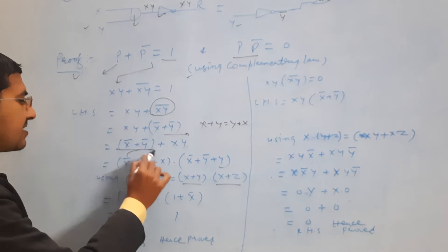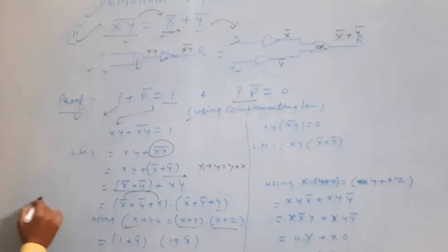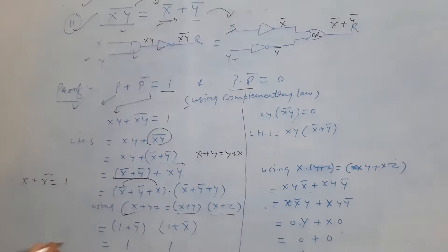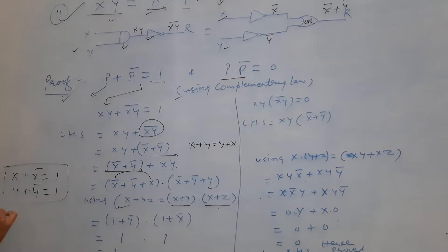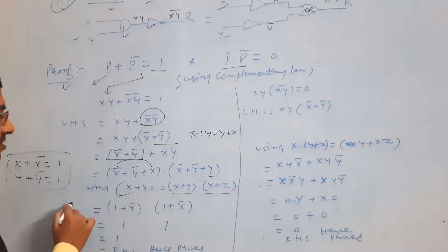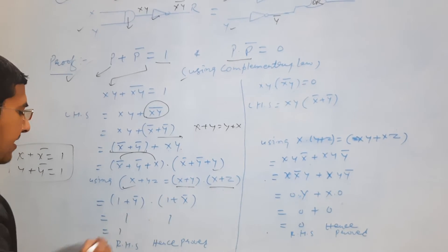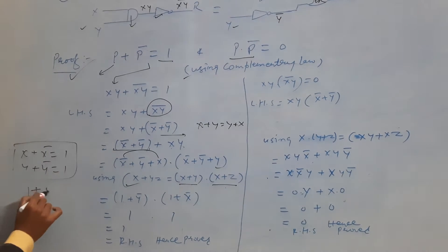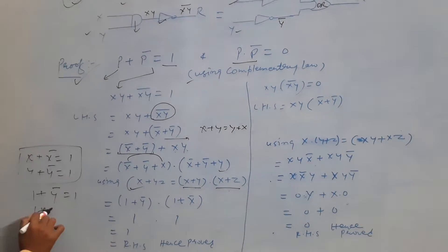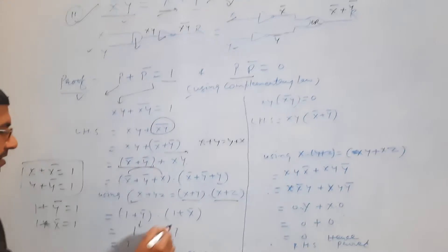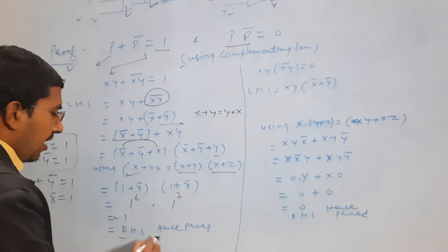Now x' + x: since p + p' = 1, similarly x + x' = 1 and y + y' = 1. Putting these values into the statement, we get (1 + y') · (1 + x'). We know that 1 + y' = 1 and 1 + x' = 1. So this value will be 1 · 1, and 1 dot 1 is always 1. Hence this equals the RHS.